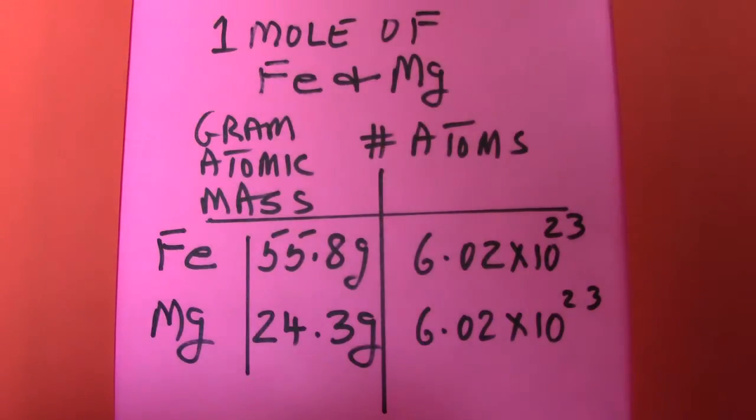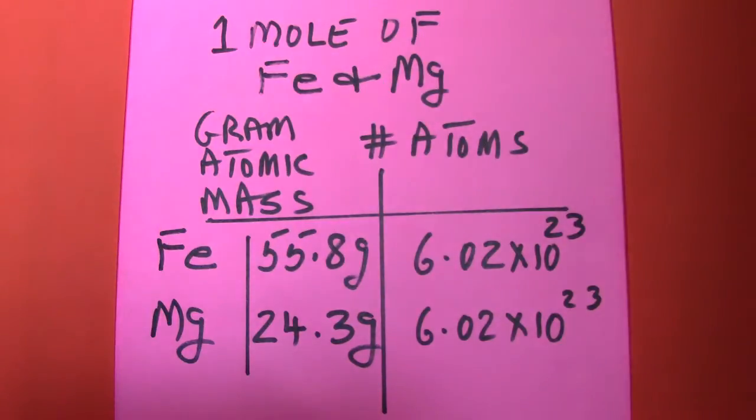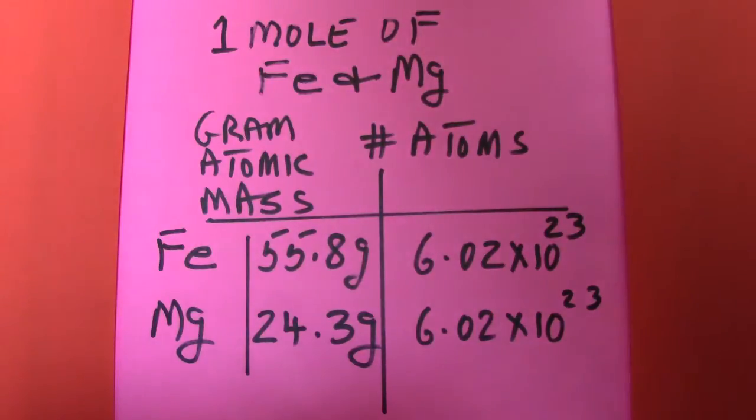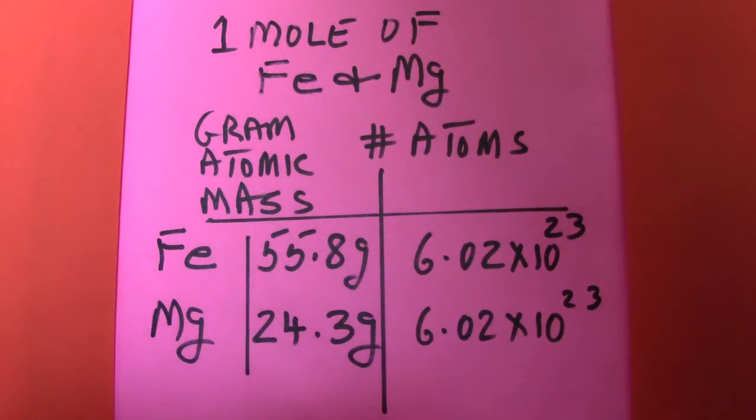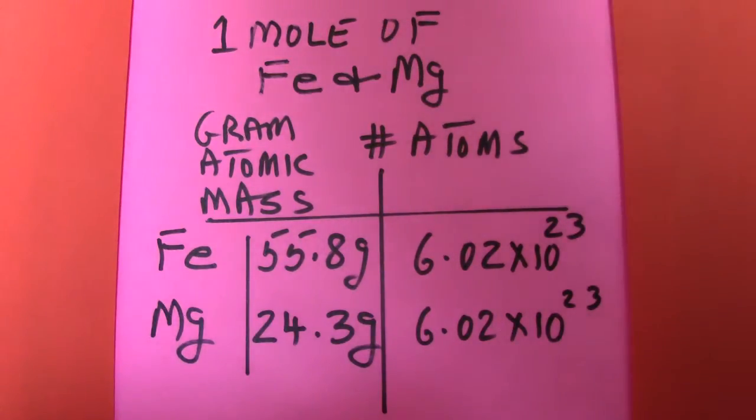Now I suppose we could talk about a mole of pencils but in practical terms it's not useful because it's hard to imagine 6.02 times 10 to the power of 23 pencils - you wouldn't know what to do with it or where to store it. But in chemistry a mole of iron or a mole of magnesium or a mole of helium makes perfect sense.